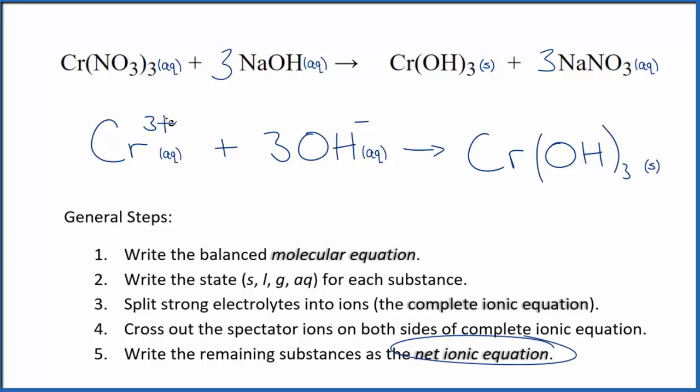You'll notice charges balance. We have a 3 plus here, 3 times 1 minus, that's 3 minus. So that all adds up to zero over here in a neutral compound. That adds up to zero. So the charge is conserved. And if you count the atoms up, they're balanced as well. This is Dr. B with the balanced net ionic equation for Cr(NO3)3 plus NaOH. Thanks for watching.